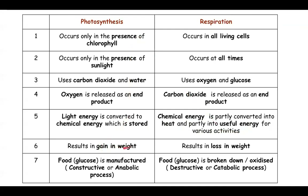Photosynthesis results in a gain in weight because carbon from the atmosphere is changed into glucose and stored in the organism's body. In respiration, glucose is broken down and converted into carbon dioxide, which is lost to the atmosphere, resulting in a loss in weight. Photosynthesis manufactures glucose, so it is an anabolic process. Respiration breaks down glucose, so it is a destructive or catabolic process. These two processes are therefore very different from each other.